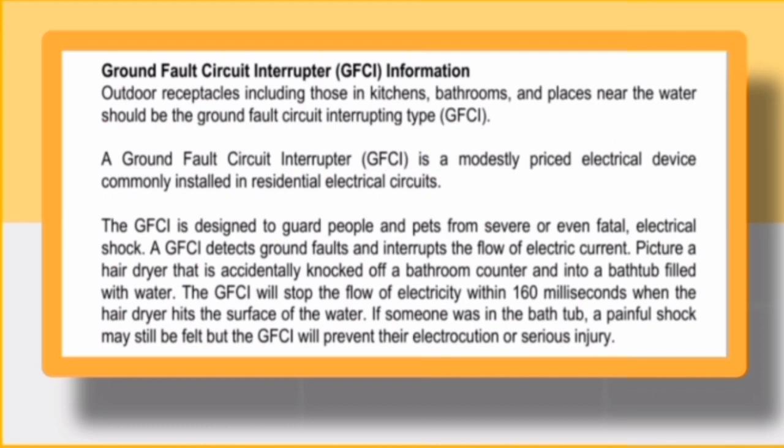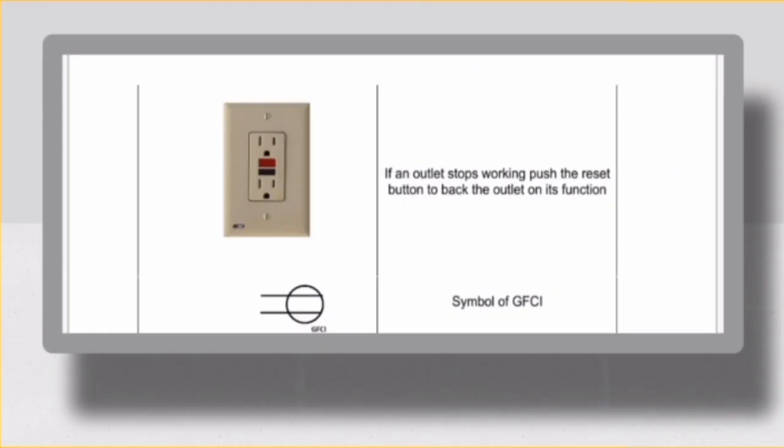Imagine nasa bathroom ka at gumagamit ka ng hair dryer, at aksidente itong nahulog sa bathtub na punong-puno ng tubig. Ang GFCI ay kusang papahintuin ang daloy ng kuryente within 160 milliseconds mula nung nahulog ang hair dryer sa bathtub. Kung may tao sa bathtub, mararamdaman pa rin ang painful shock, but the GFCI will prevent electrocution or serious injury. Kung ang outlet ay hindi na gumagana, pindutin lamang ang reset button para magamit ito muli.